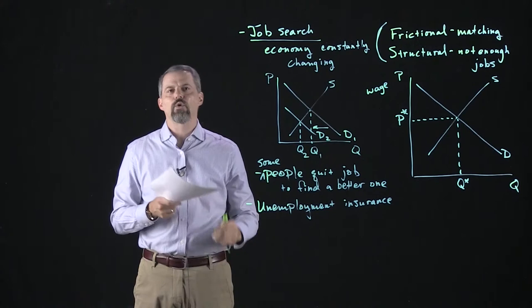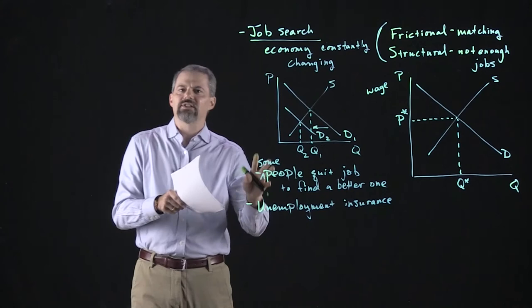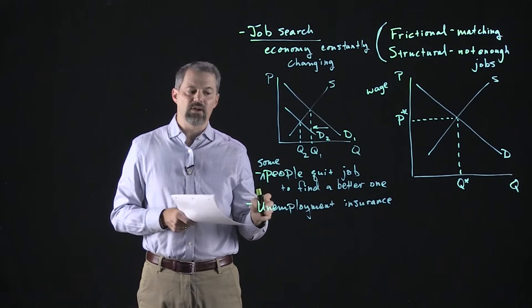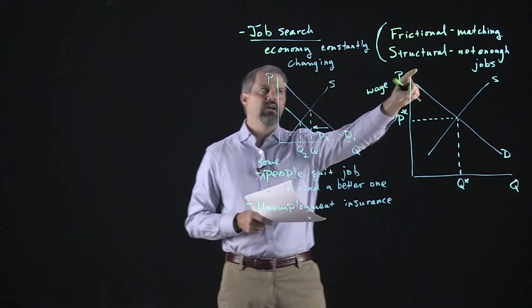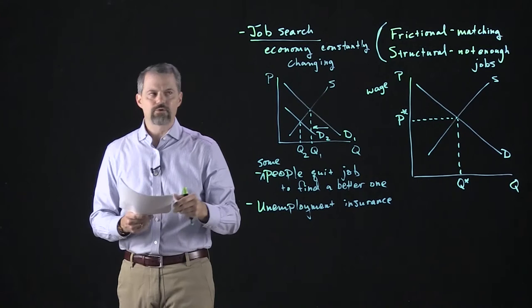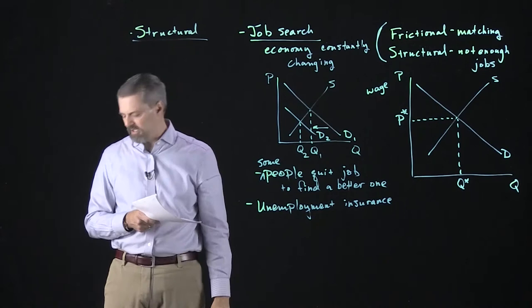In terms of frictional unemployment — the economy constantly changing, people quitting to find better jobs, employers firing to find better workers, and unemployment benefit generosity affecting job search — this we'd describe as a characteristic of a healthy economy. Structural unemployment is worse: it's a situation where there's not enough jobs to go around, so it doesn't matter how hard you look.